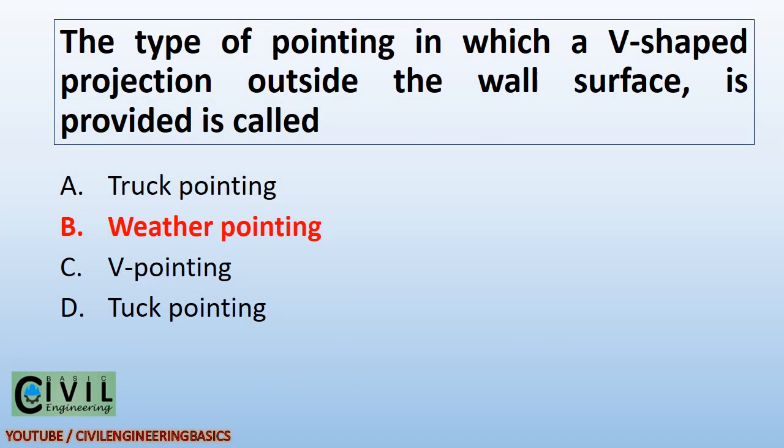The type of pointing in which a V-shaped projection outside the wall surface is provided is called weather pointing.